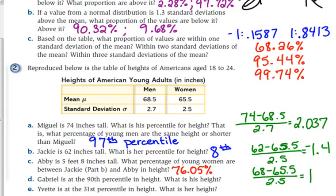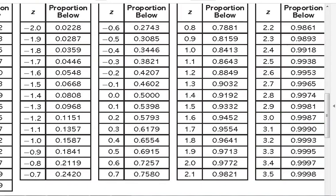Let's look at D and E. Another twist on the question. Gabriel is at the 90th percentile in height. What is his height? Well, we've got to start with the table here. We've got to start with our table. If he's at the 90th percentile, that means...